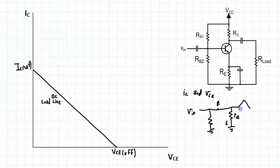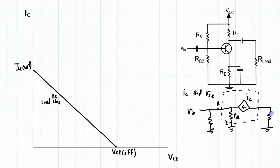and then the collector with the dependent current source representing the collector current. So this is the transistor, and then that gets applied across an output load, and this load resistor here I'm going to